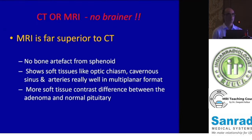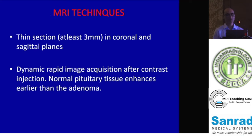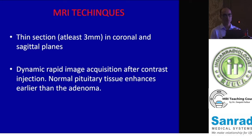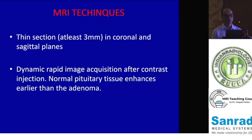MRI is the modality of choice when evaluating this area, but it cannot just be a routine MR brain. You have to have a very focused imaging when suspecting pathologies here: smaller FOV, thinner sections especially on the coronal and sagittal planes, and a rapid multiphasic dynamic post-contrast study especially when looking for microadenomas. It is in the early phases that the microadenoma is hypo-enhancing relative to the normal pituitary gland, and later the enhancement becomes more or less the same. You have to pick up that differential enhancement in the early post-contrast phases to diagnose microadenomas.